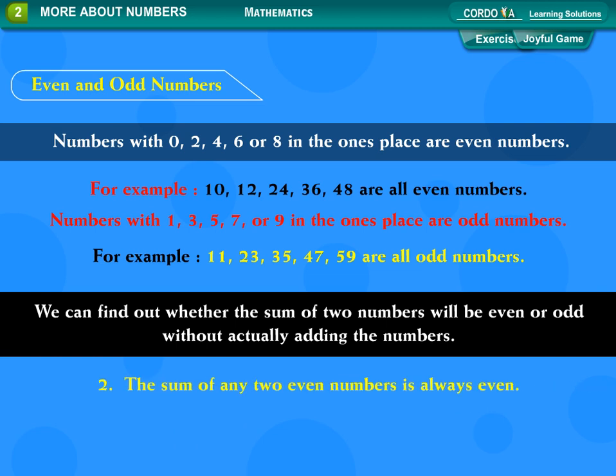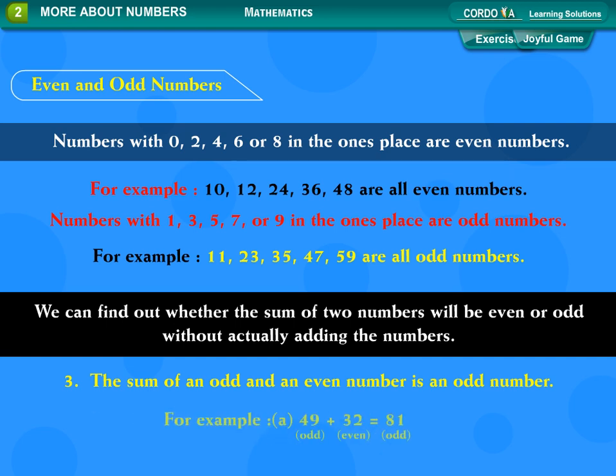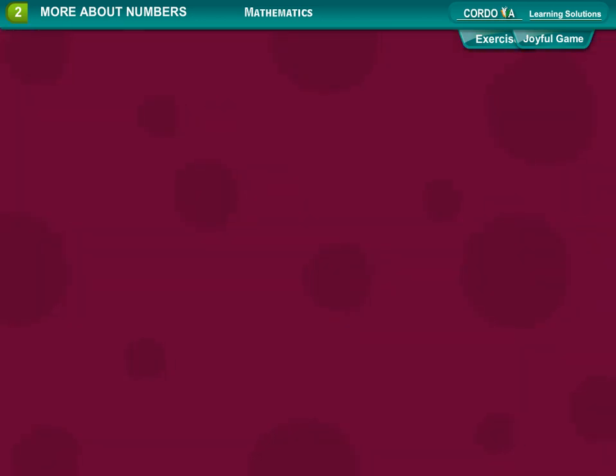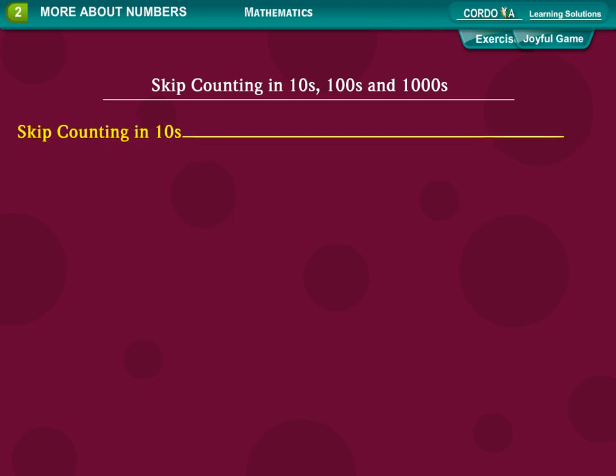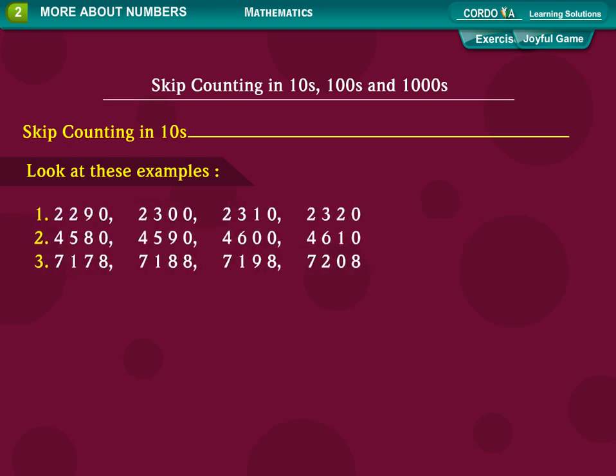The sum of any two even numbers is always even. For example: 18 plus 22 equals 40. The sum of an odd and an even number is an odd number.